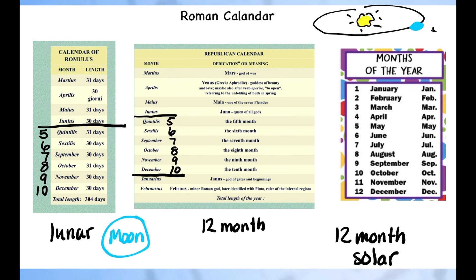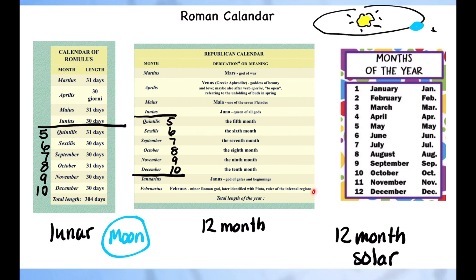Then he adds two more months. One is named after a god — Januarius, which we'd re-spell with a J — January. And February is named after another minor Roman god, giving us February. So now we have a 12-month calendar.